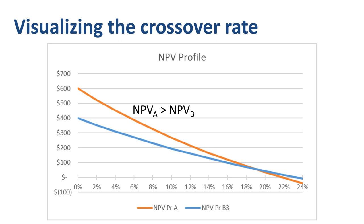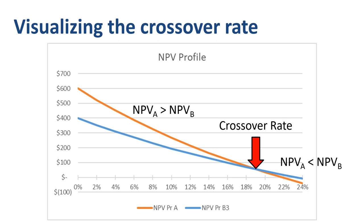However, that NPV gap shrinks the further you go to the right, until the NPVs are equal at the crossover rate of 19%. Beyond 19%, even though the NPVs are getting fairly low or even negative in absolute terms, the NPV of project B is higher than that of project A, meaning project B would be preferred at those higher discount rates.